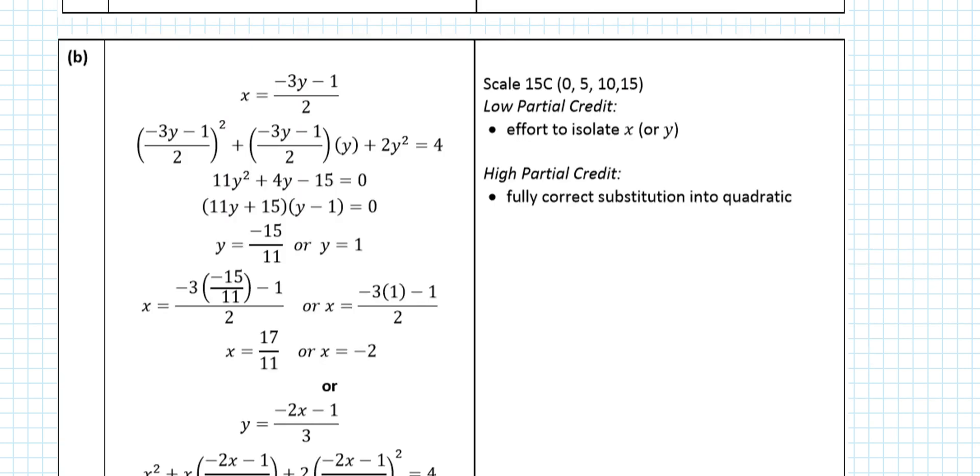And a marking scheme for this then is a fairly hefty 15 marker. So you're looking at 5 marks for low partial credit, 10 marks for high partial credit, and 15 marks for full credit. Realistically, that's a very nice question.